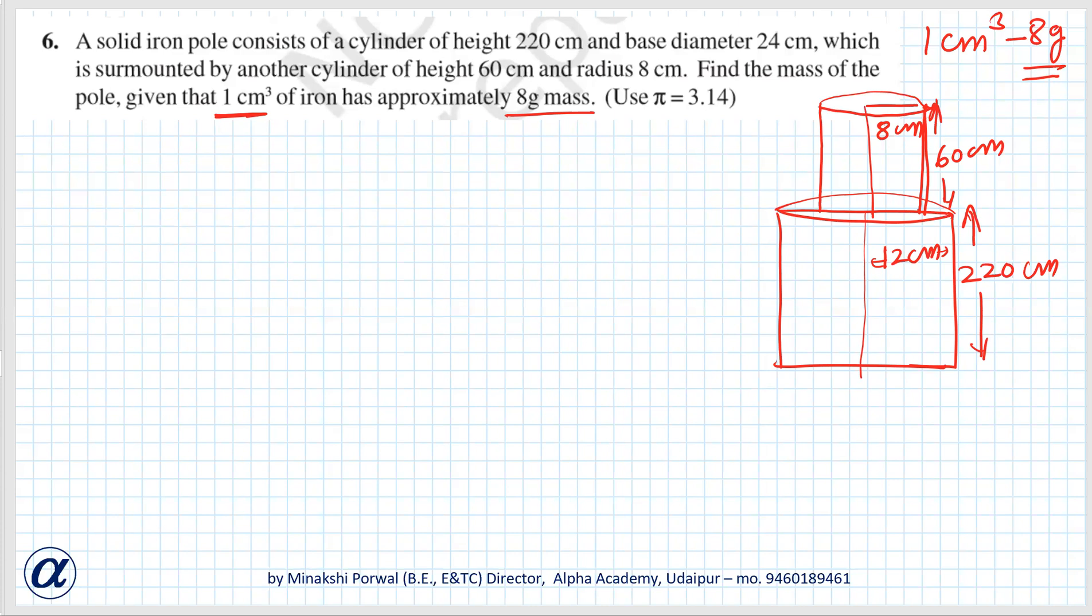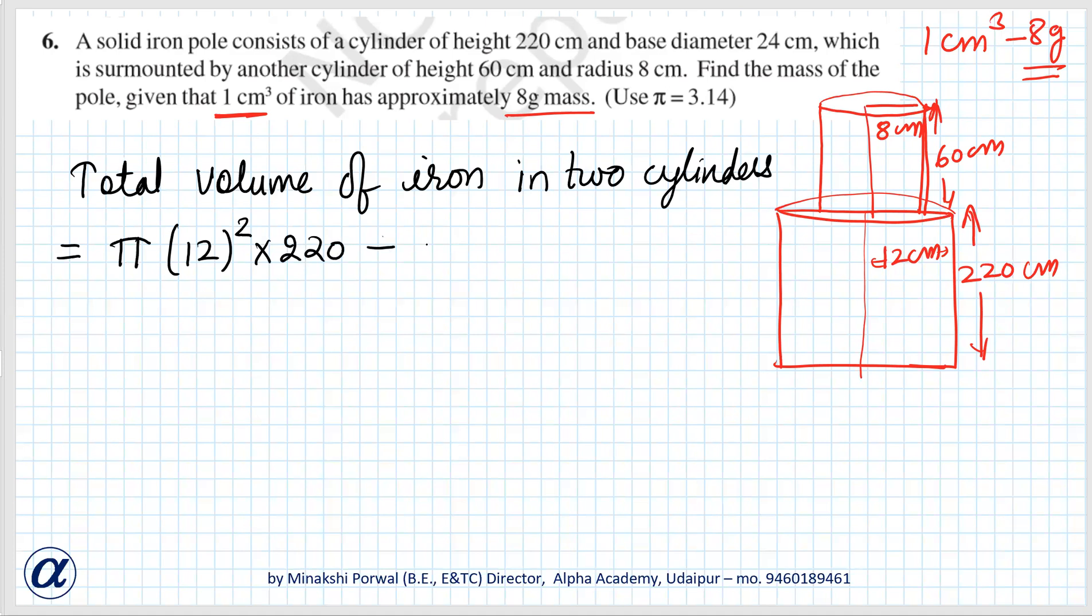So basically we have to find the total volume of both the cylinders. Total volume of iron in two cylinders is equal to pi r square h. The lower cylinder is pi times 12 square times 220 plus the upper cylinder pi times 8 square times 60, taking pi outside.